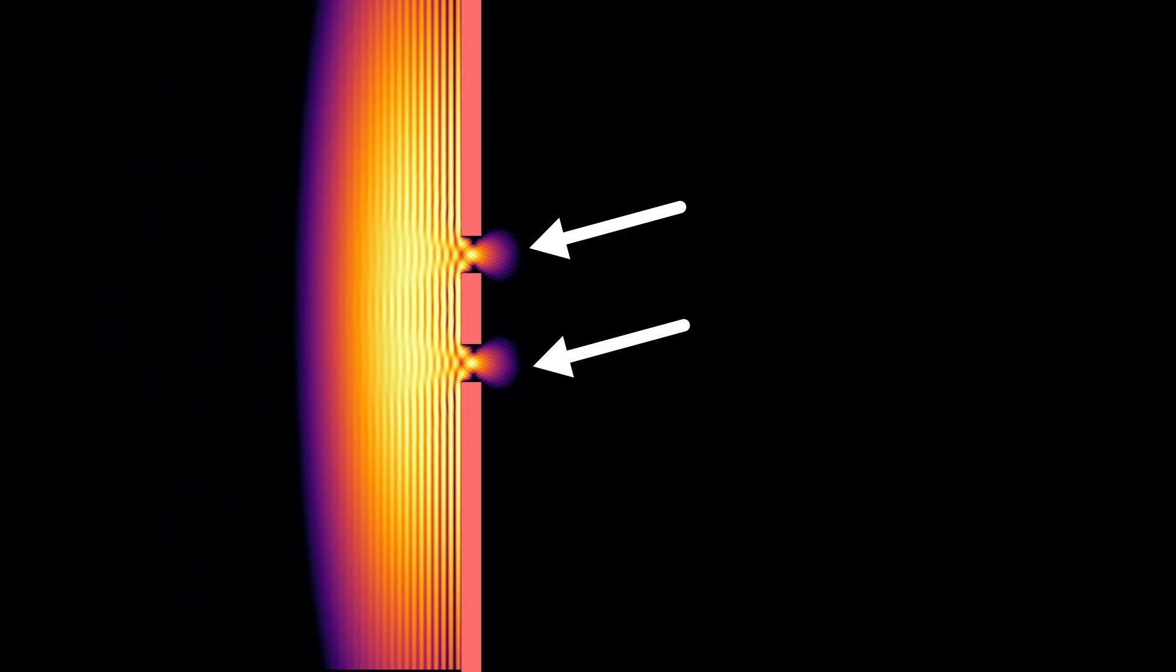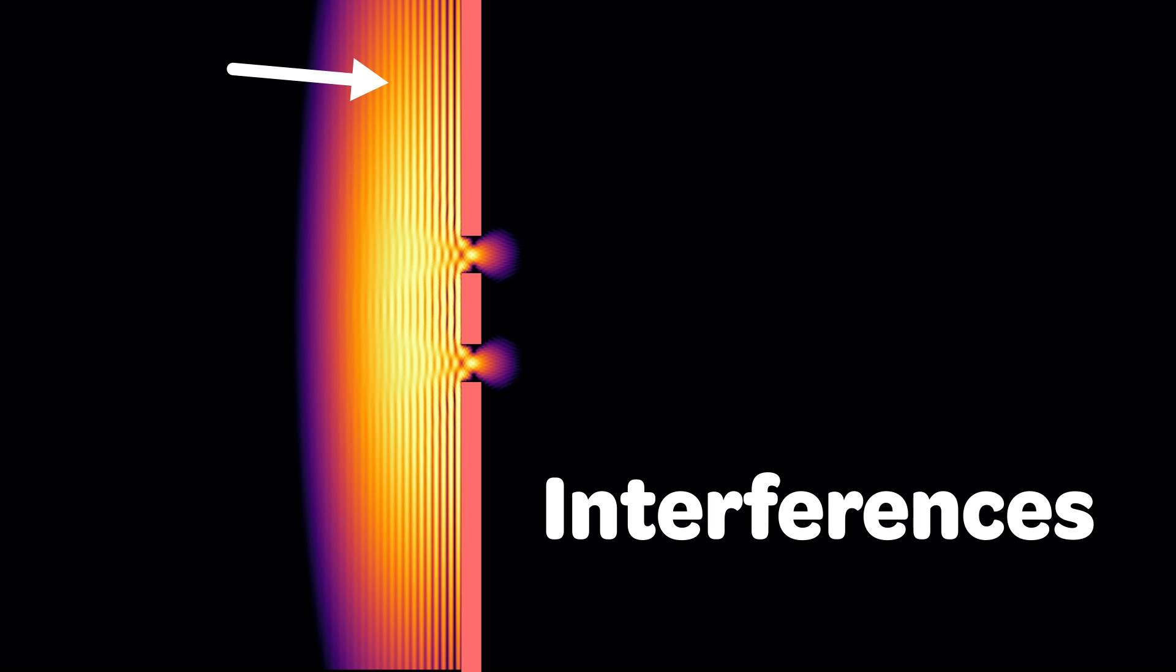You can see that some portion of the electron wave packet passed through the gaps. At the same time, you can also see the interference here and there. This is a temporary standing wave due to the interference of the incident wave and a reflected wave. And this is a temporary standing wave in vertical direction due to the reflection at these lines.